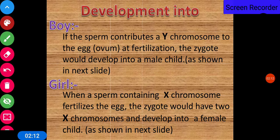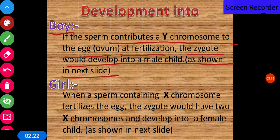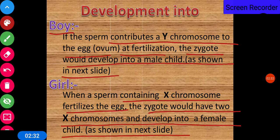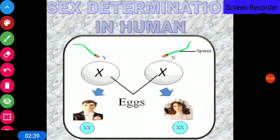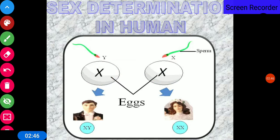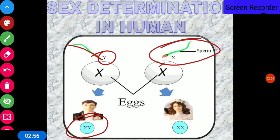How is a boy developed? If the sperm contributes a Y chromosome to the egg at fertilization, the zygote develops into a male child. When a sperm containing an X chromosome fertilizes the egg, the zygote has two X chromosomes and develops into a female. So if the Y sperm combines with the egg, XY forms — a male. If the X sperm combines with the egg, XX forms — a girl.